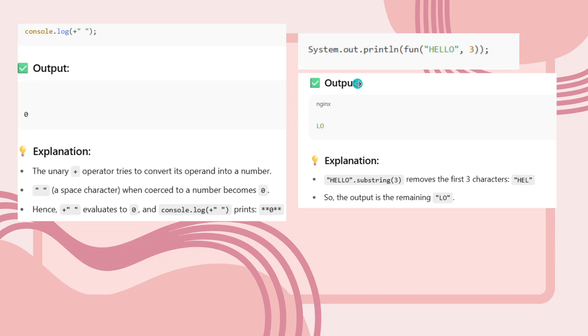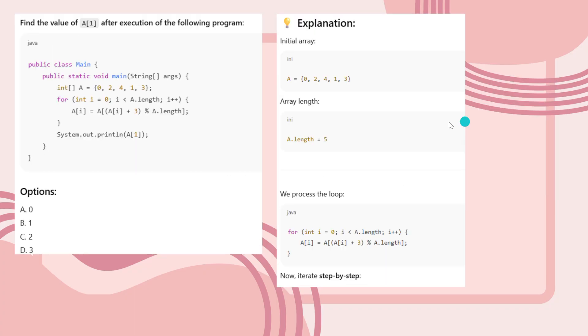This is another question: System.out.println(fun(hello, 3)). The output is 'lo'. Hello.substring(3) removes the first three characters: h, e, l. So the output remaining is 'lo'. I hope you got it. Let's go into the other question. If you want, have a screenshot.